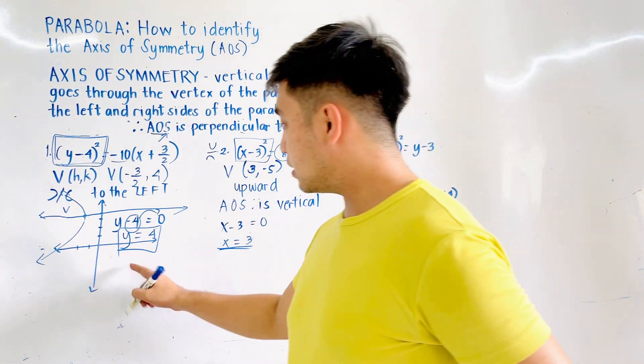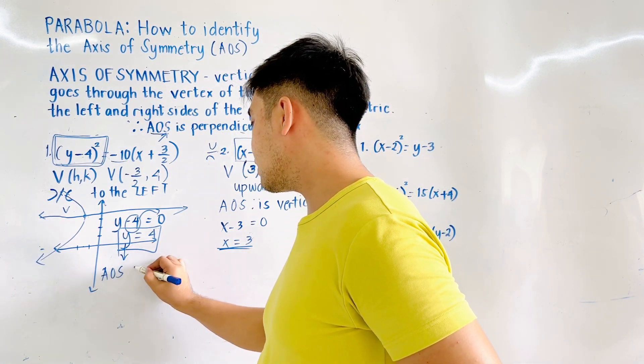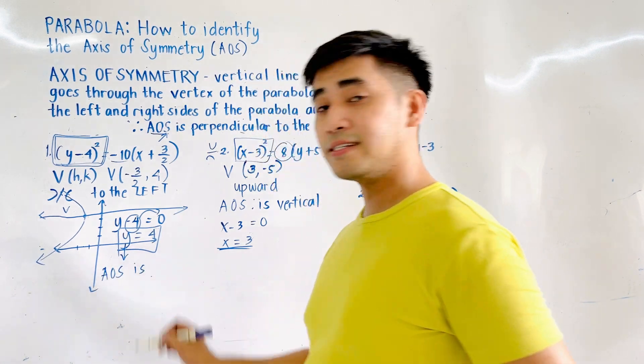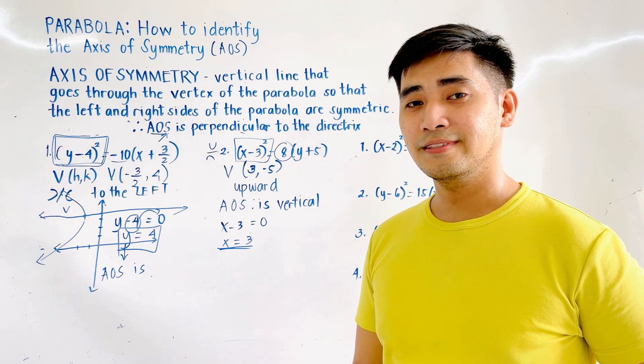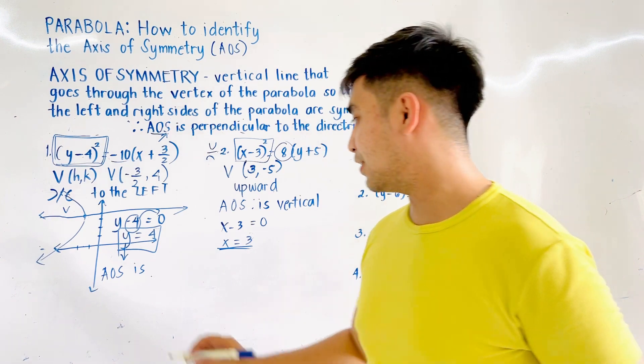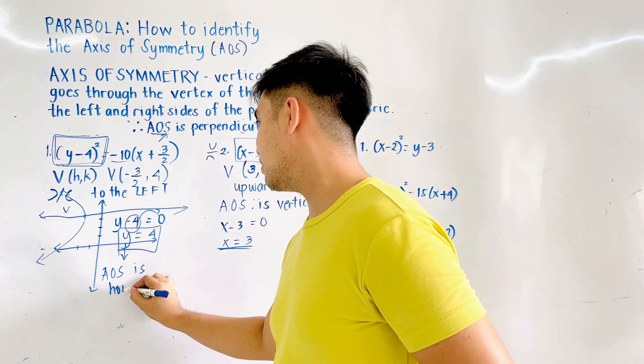Going back to the first example: if the equation uses y, we could say that the axis of symmetry is horizontal.